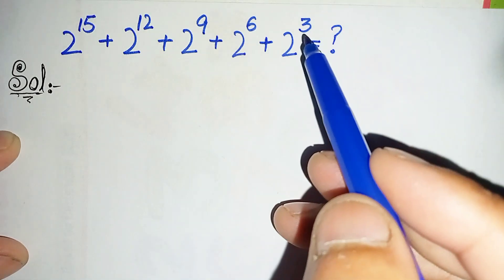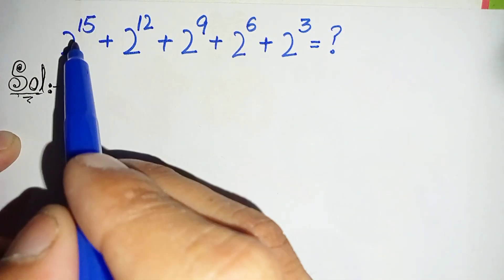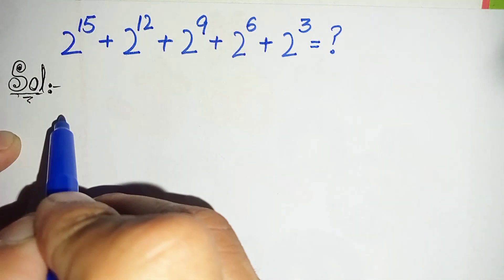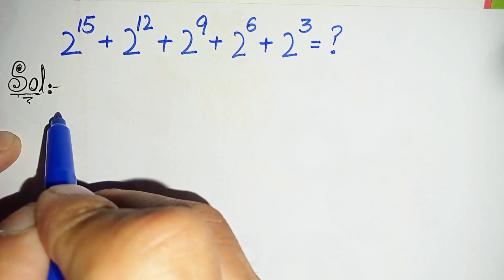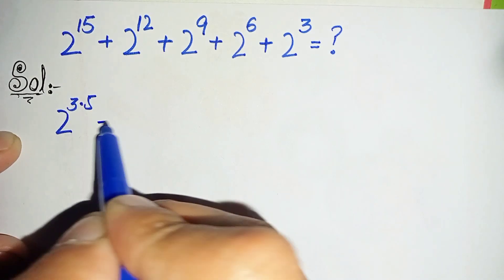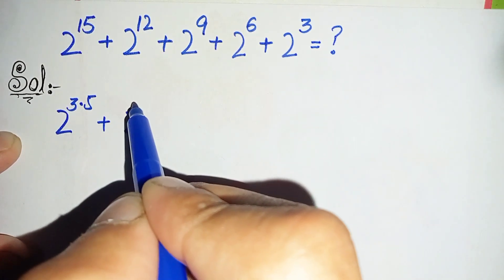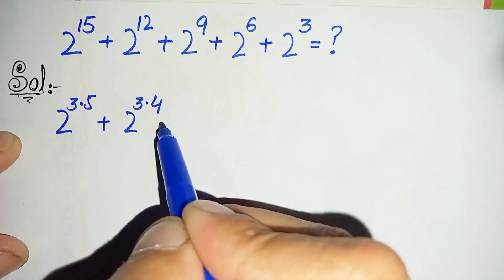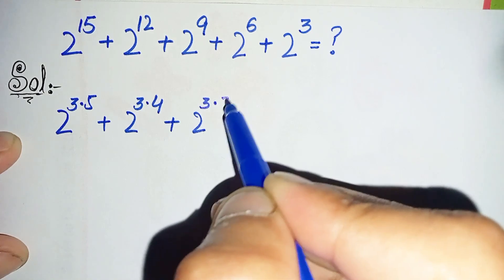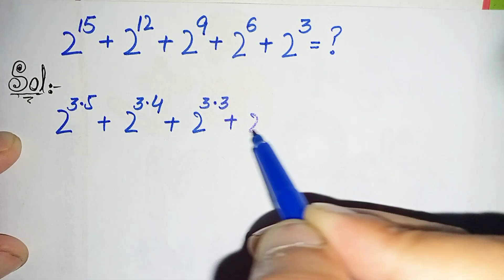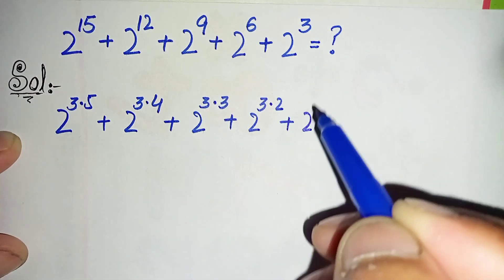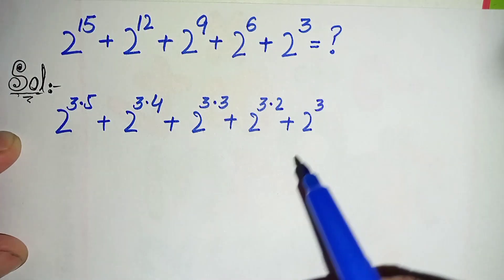First of all, we will split the powers as 3 times another number. So we can write: 2 raised to power 15 as 2 raised to power 3×5, plus 2 raised to power 12 as 2 raised to power 3×4, plus 2 raised to power 9 as 2 raised to power 3×3, plus 2 raised to power 6 as 2 raised to power 3×2, and we leave the last term 2 raised to power 3 as the same.